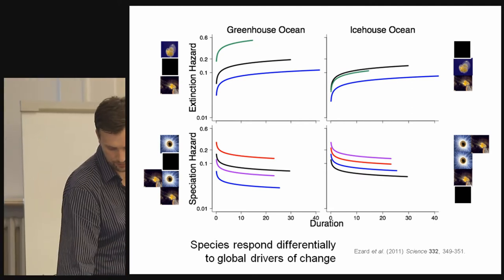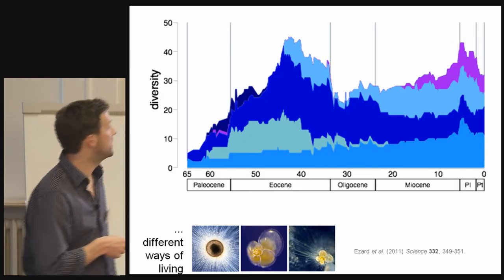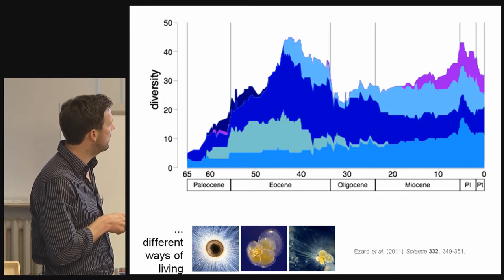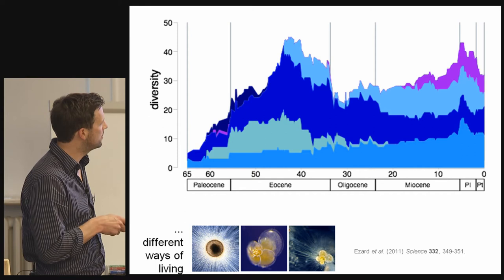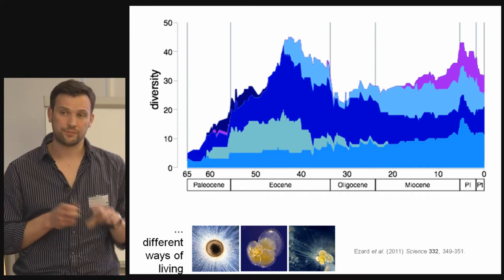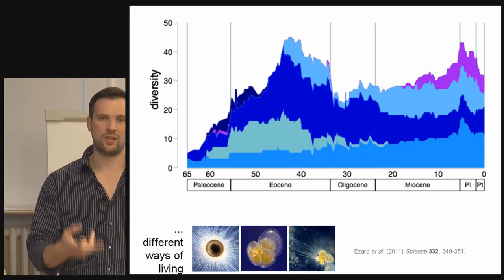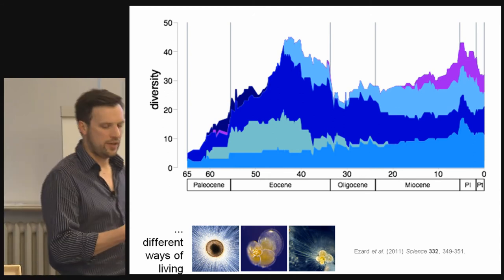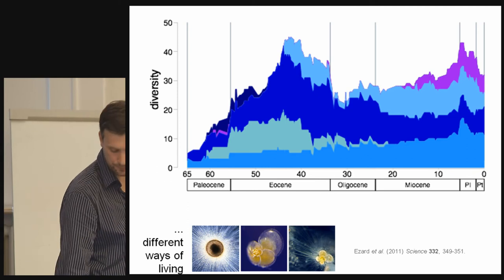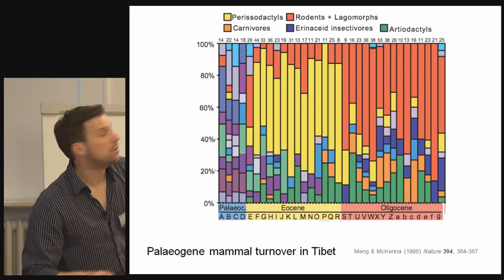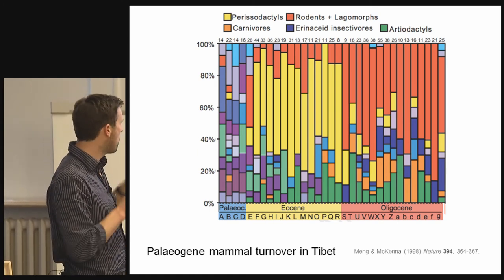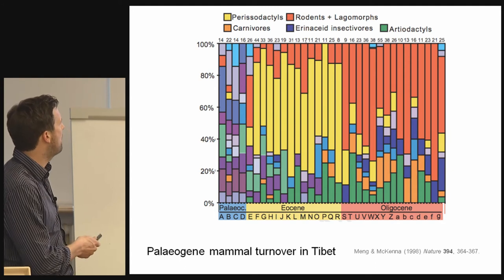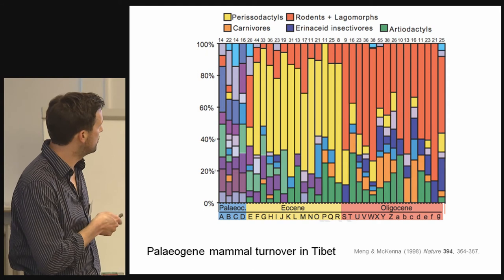That reminds us of our split diversity curve. We see that keels and symbionts only exist in this greenhouse world, whereas spines and symbionts only exist in the modern ice house world. Different oceans, different types of species. There's no obvious equilibrium here — the system isn't moving towards some equilibrium state. It's responding, feeding back, moving through a series of ongoing transients. We can see this in other systems too. This is a paper by Meng and McKenna in 1998 in Nature, looking at Paleogene mammal turnover in Tibet. Same time scale — Eocene to Oligocene, moving through that transition from greenhouse to ice house — with large turnover in the dominant species.